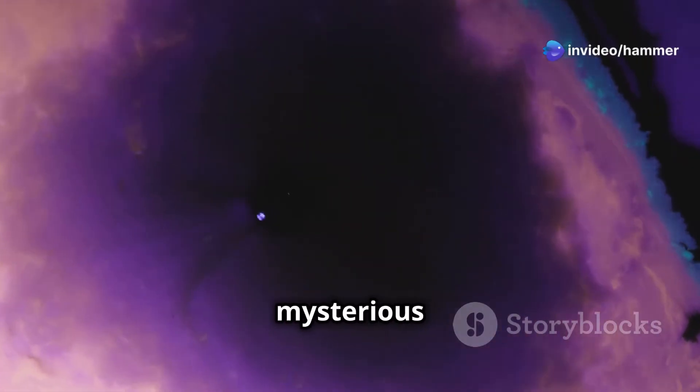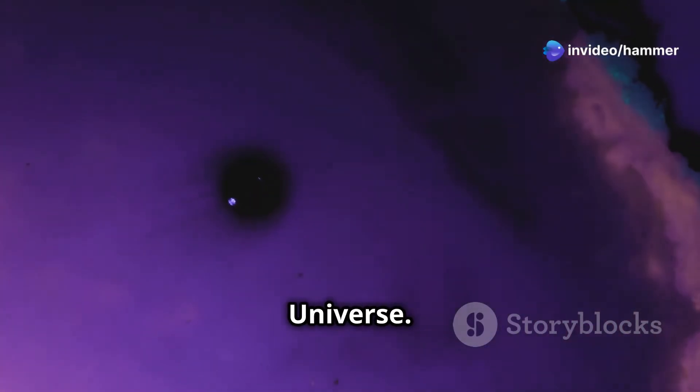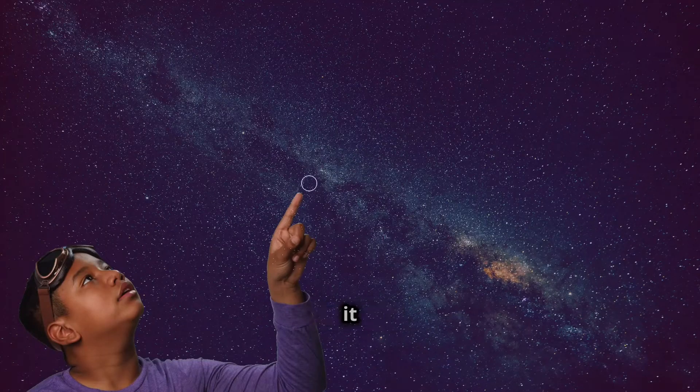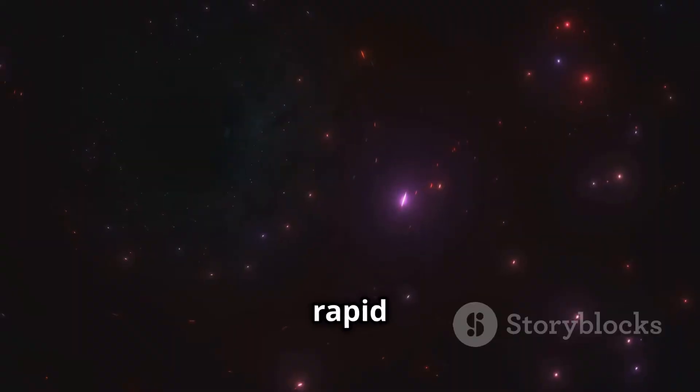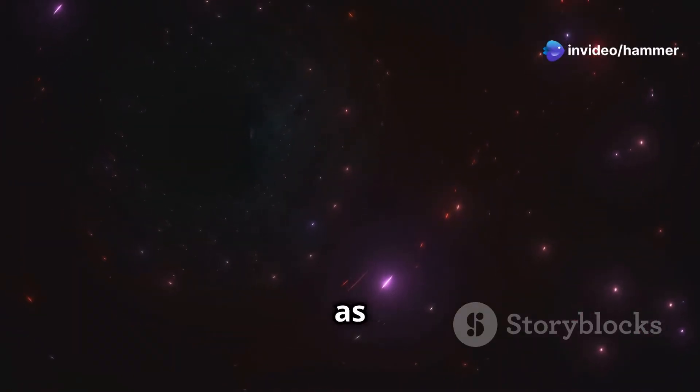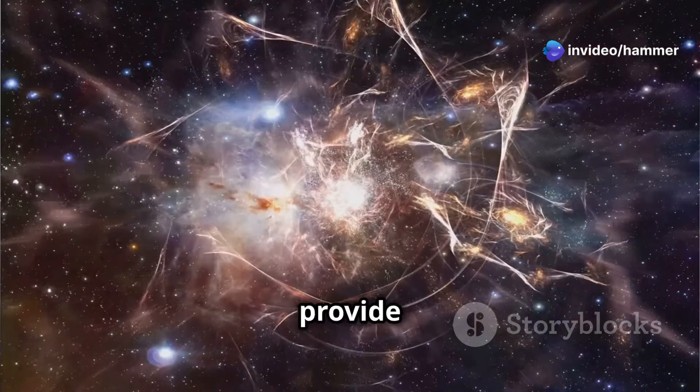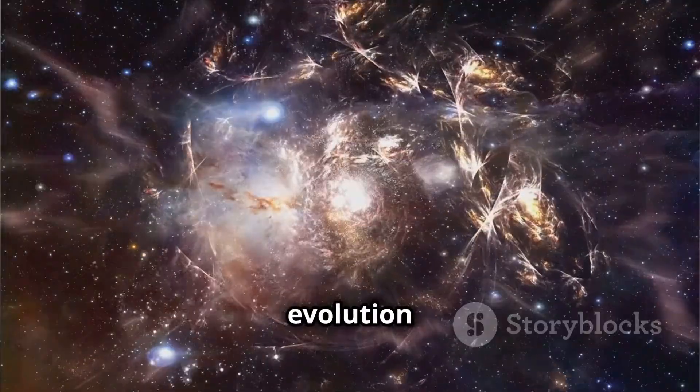Dark matter is a mysterious substance that makes up about 85% of the matter in the universe. We cannot see dark matter directly, but we know it exists because of its gravitational effects on visible matter. The rapid growth of this early black hole suggests that it may be accreting dark matter as well as normal matter. This could provide us with a new way to study the properties of dark matter and its role in the evolution of the universe.